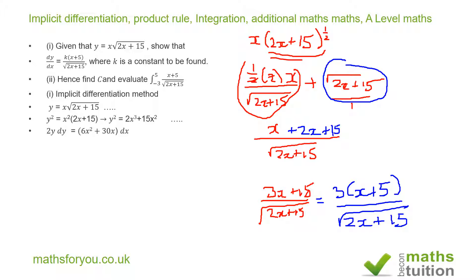We are differentiating y with respect to y and the right-hand side with respect to x. Dividing both sides by dx and then by 2y, we get dy/dx equals 6x squared plus 30x all over 2y.